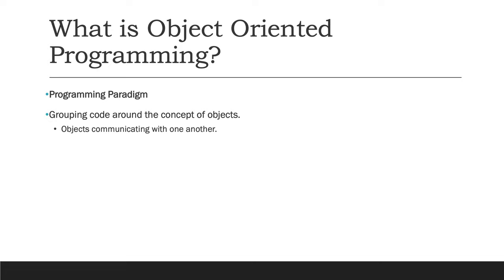So what is object-oriented programming? It's a programming paradigm, meaning it is a way of structuring and designing a program — an approach towards programming. This approach is specifically around the idea of an object. In Ruby, everything is an object, and these objects communicate with one another through what's called an interface — a logical point at which objects are able to communicate with each other.